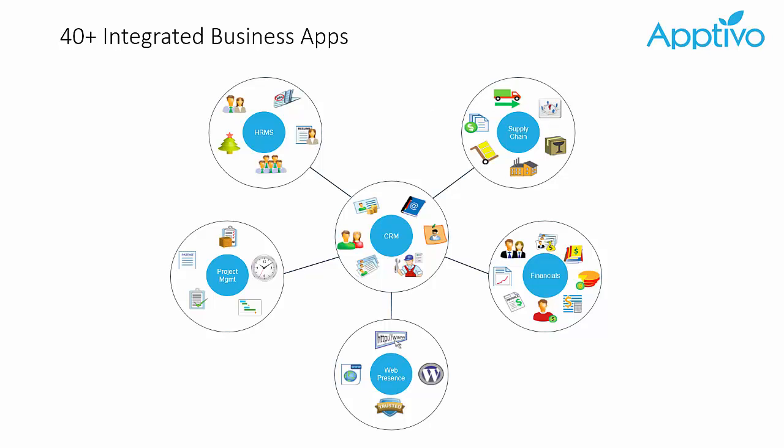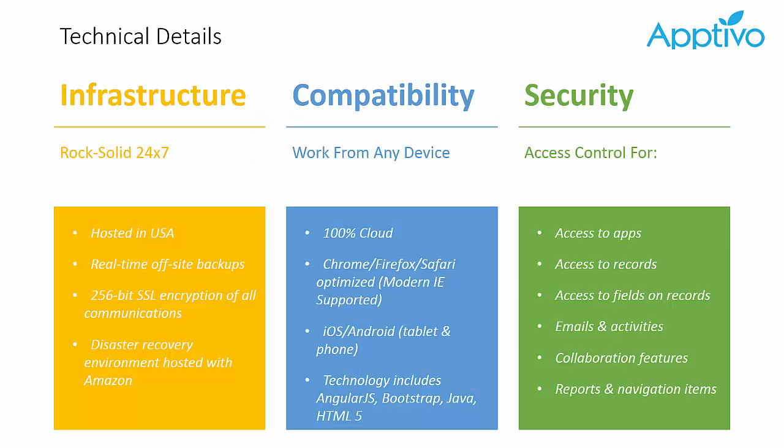Let's talk about what Apptivo is as a whole. It's an integrated suite of cloud business applications with a ton of different apps from various functional areas. The CRM acts as the core of the system, where having that central contact database serves as the foundation for all your other business operations. Everything in Apptivo is designed to integrate together, share information across the various applications, and forge integrated business flows.